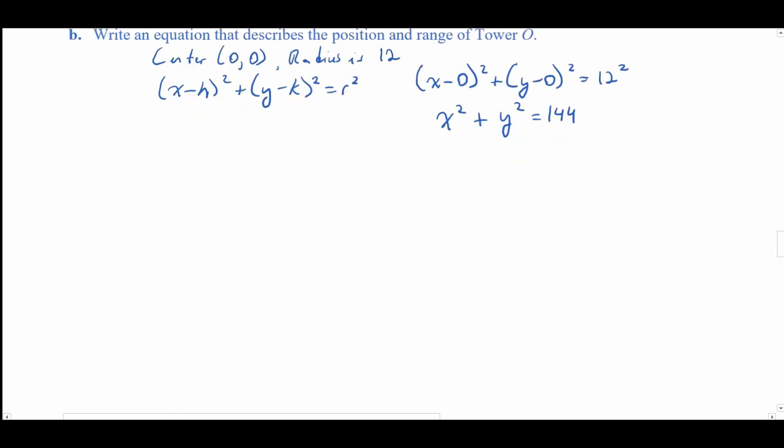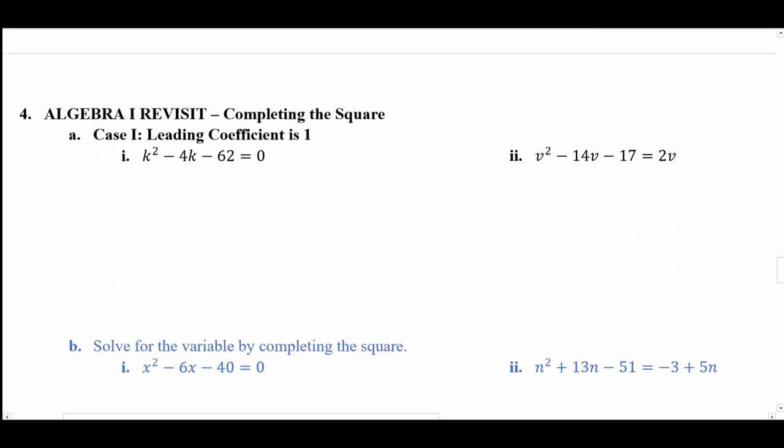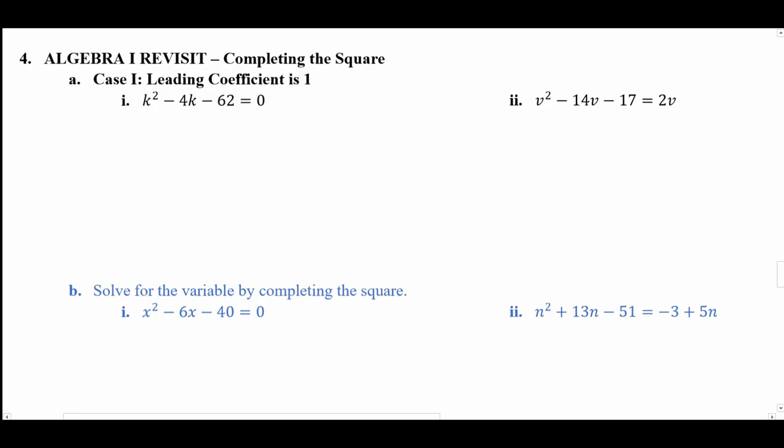Now there is a skill we can use to find the radius and center of a circle from its equation — a skill from Algebra 1 that also appears in Algebra 2. This skill is known as completing the square. It is one of three methods to solve a quadratic: factoring, the quadratic formula, or completing the square.